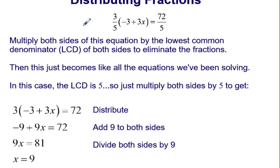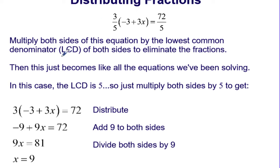Here's an example of an equation with fractions: 3 fifths times the quantity negative 3 plus 3x equals 72 over 5. Instead of distributing the 3 fifths, you can multiply both sides of this equation by the lowest common denominator, or the LCD, of both sides to eliminate the fractions.